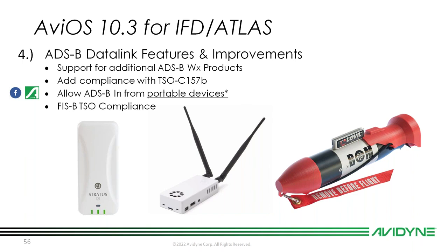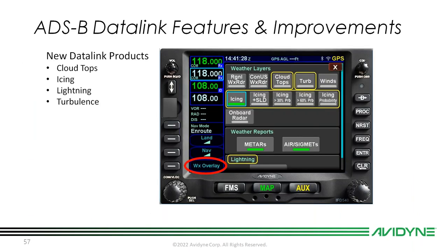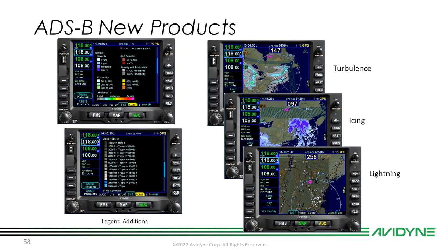Some other data link features: support for additional ADS-B weather products, added compliance with TSO-C157b, ADS-B from portable devices, and FIS-B TSO compliance. We added cloud tops, icing, lightning, and turbulence as layers in your map. Go to the weather overlay, toggle those on, select regional weather radar, and now those additional layers are available. In your data link status page, the legend is much bigger in 10.3 because of the additional products.